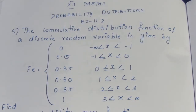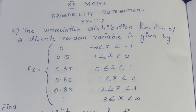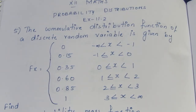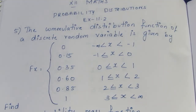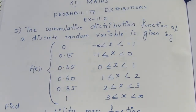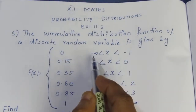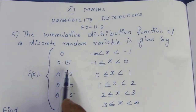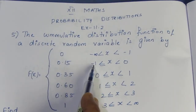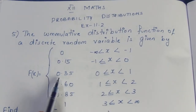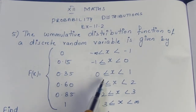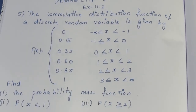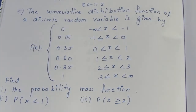probability distribution exercise 11.2, 5th sum — we will look at the cumulative distribution function of a discrete random variable. F of x is given as: 0 when x is from minus infinity to minus 1; 0.15 when x is greater than or equal to minus 1 to 0; 0.35 when x is greater than or equal to 0. Values continue up to infinity.